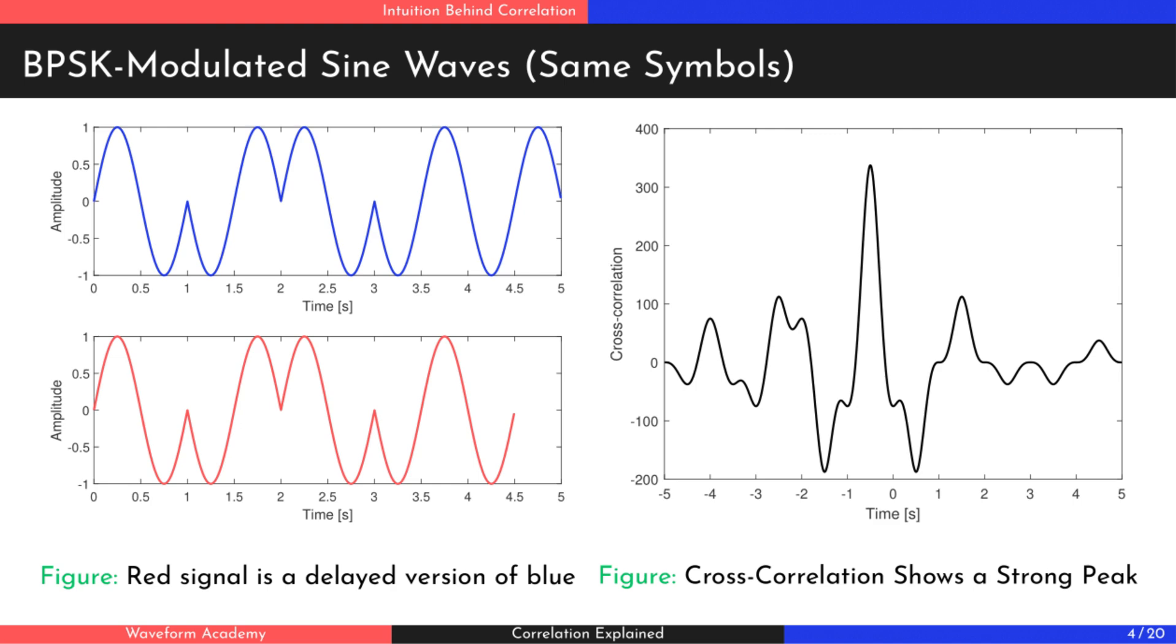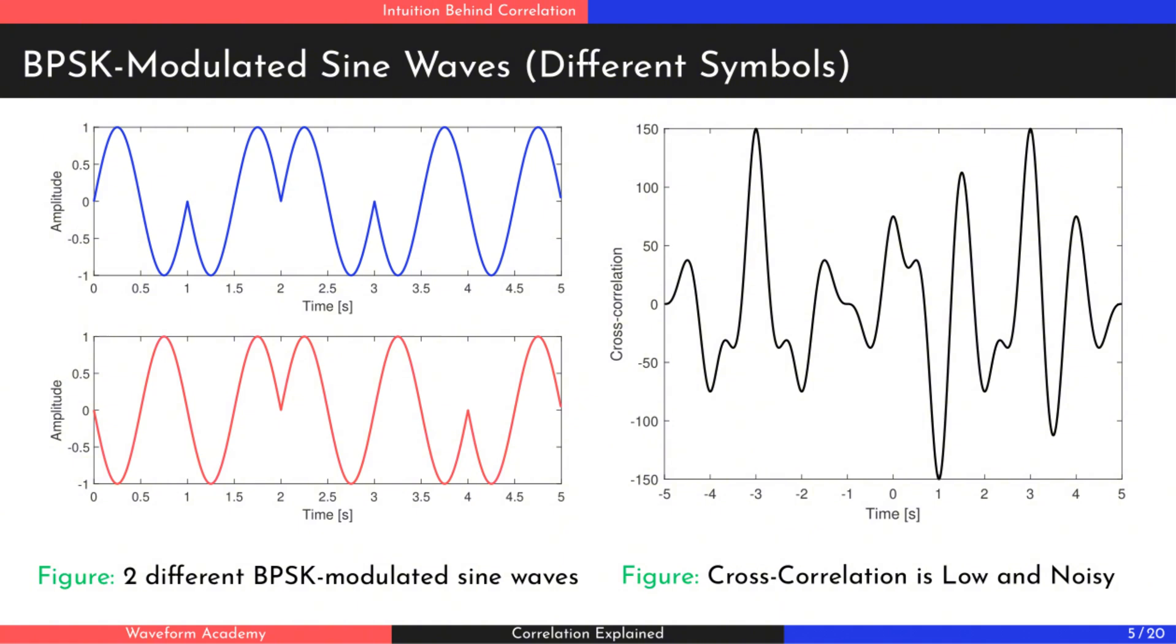Next, let's look at a second example. When two signals are completely different, the correlation doesn't show a strong peak. Instead, the values are scattered and noisy, which indicates that the signals are quite different from each other.